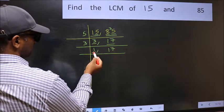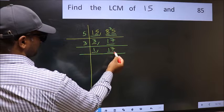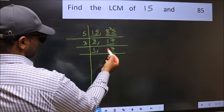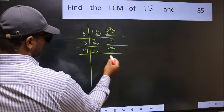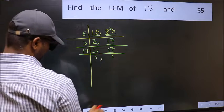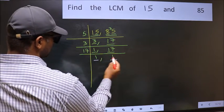Now we got 1 here. So focus on the next number 17. 17 is a prime number. So 17 times 1 is 17. So we got 1 in both places.